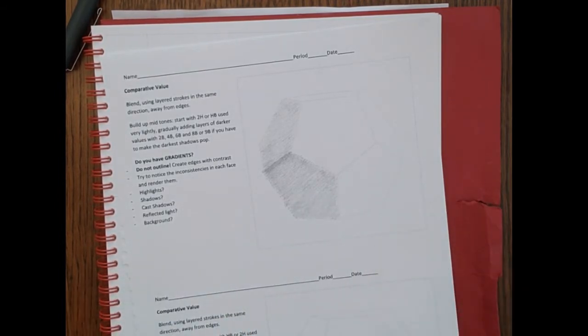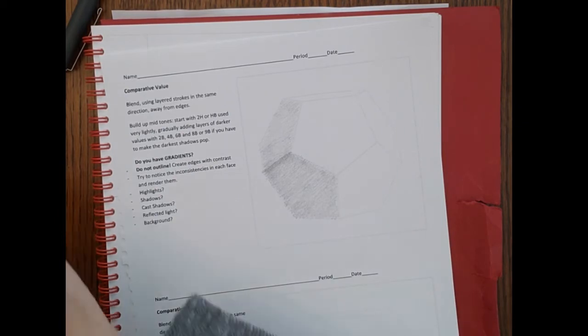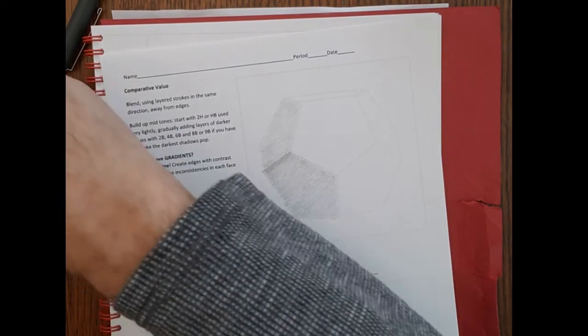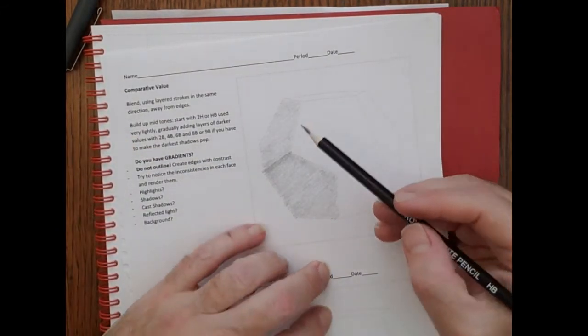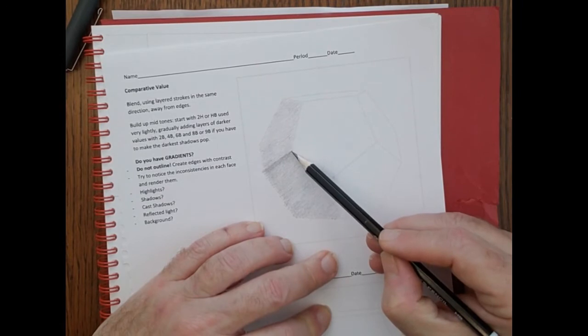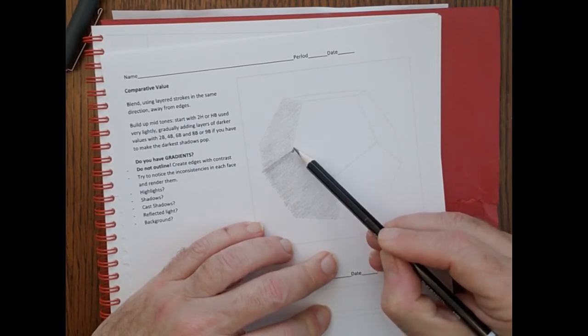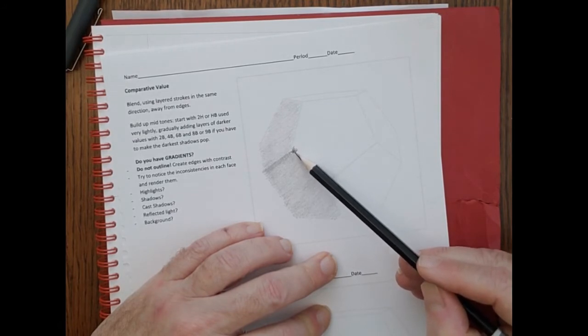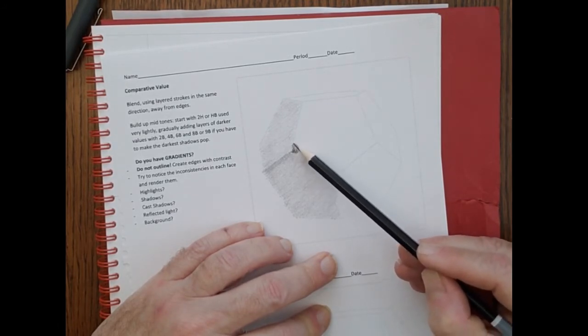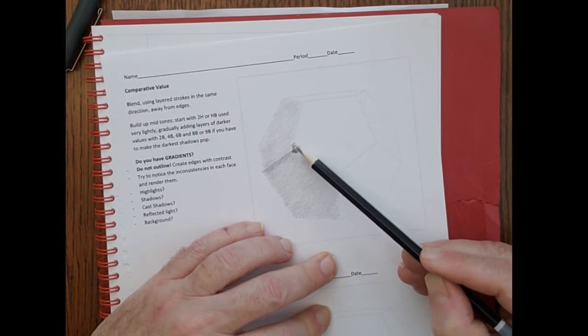So now I hope you guys can see how this is becoming more three-dimensional. But if you can't now, I'm sure you will soon. I'm going to move to the HB and I'm going to start up here. Pretty dark along this border right here.